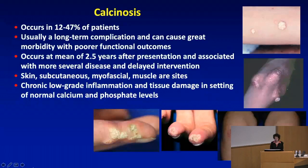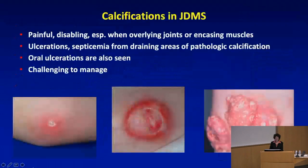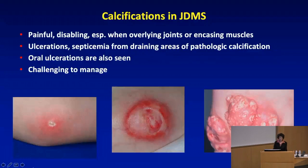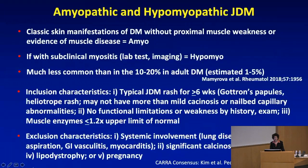We think calcinosis is due to chronic low-grade inflammation and tissue damage. These calcinotic deposits are not only painful, particularly overlying joints or encasing muscles, but they also ulcerate and become a nidus for infection. There was a little girl who at four years of age passed away with septicemia, and her extensive calcinosis was the source. One can also see oral ulcerations with the calcifications.